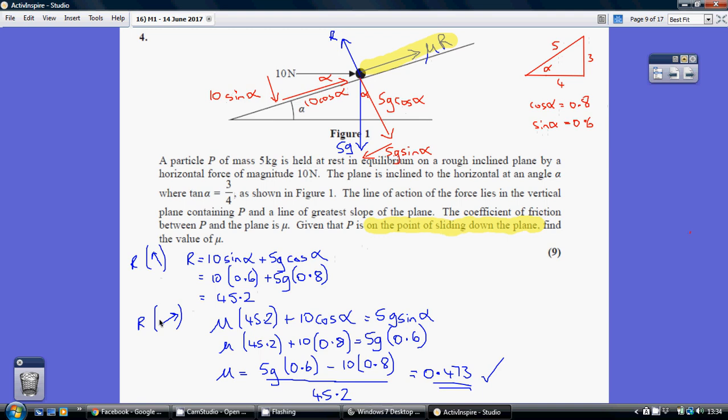Now, moving on to resolving in the direction of the plane. So my two forces going up the plane are the friction, which is mu times my normal reaction, so mu times the 45.2 which I've just worked out, and my other force up the plane is this 10 cos alpha, or 10 lots of 0.8.